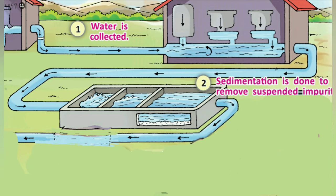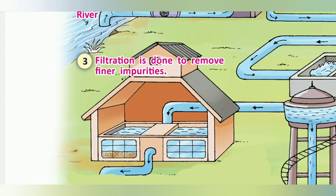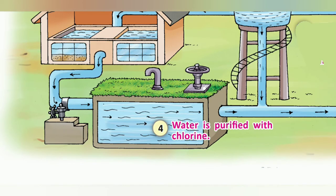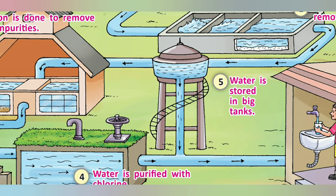Heavy impurities settle down at the bottom and the sediments are collected, leaving purified water on top. Then filtration is done to remove the remaining fine impurities. After filtration, the water is purified with chlorine. The treated water is then stored in big tanks and supplied to homes.